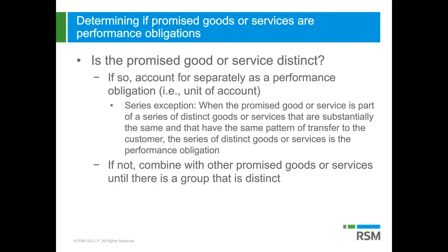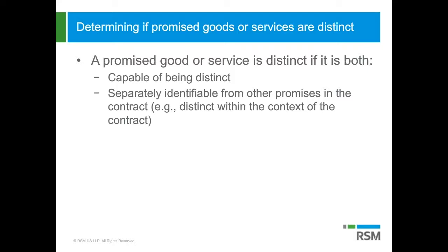A promised good or service is distinct if it is both capable of being distinct and separately identifiable from other promises in the contract — what they refer to as distinct within the context of the contract. The notion of capable of being distinct is somewhat similar to the standalone value guidance in existing GAAP today, though it has to be evaluated for both delivered and undelivered items under ASC 606. The new guidance introduces different and incremental criteria for separately identifiable that could result in combining goods or services you currently account for separately.